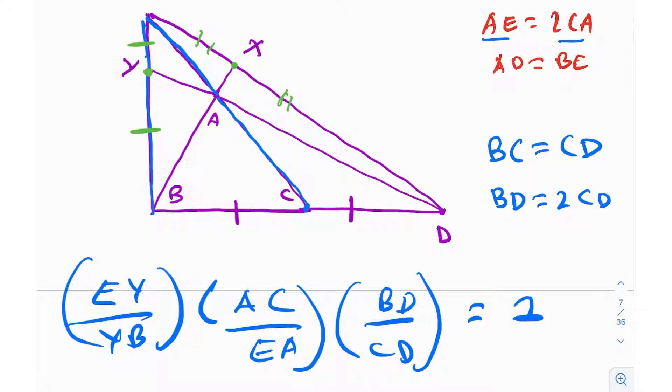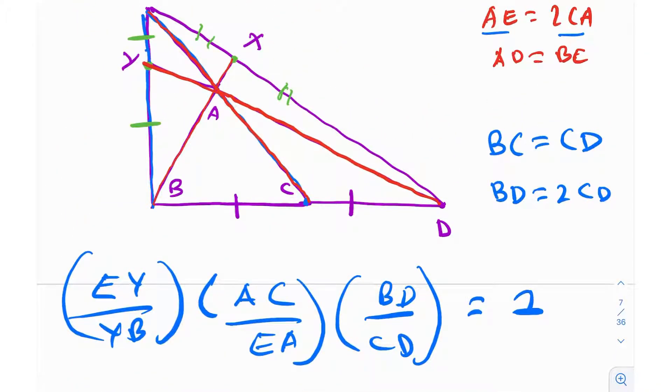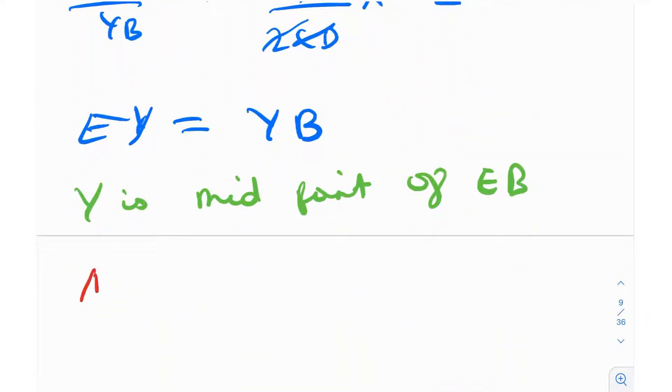Now do you actually notice something? Do you notice that this line segment EC, which I have marked in red, is actually a median? It's the median to the side BD, dividing the side BD into two equal halves. Similarly, this line segment BX is also a median because it's dividing ED into two equal halves. Similarly, this line segment DY is also a median because again it's dividing EB into two equal proportions, EY and YB. So these three are medians, and what is A? A is the point of intersection of those medians. What is the point of intersection of medians called? It's a centroid. So A is centroid of triangle BED.